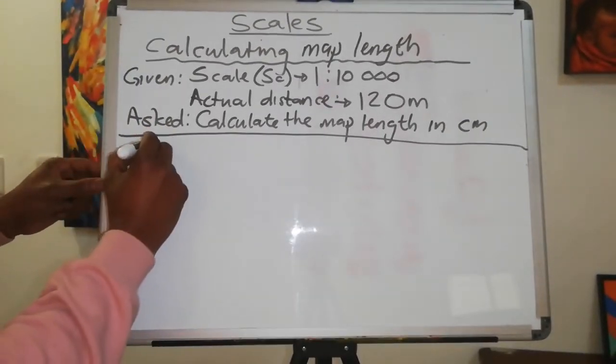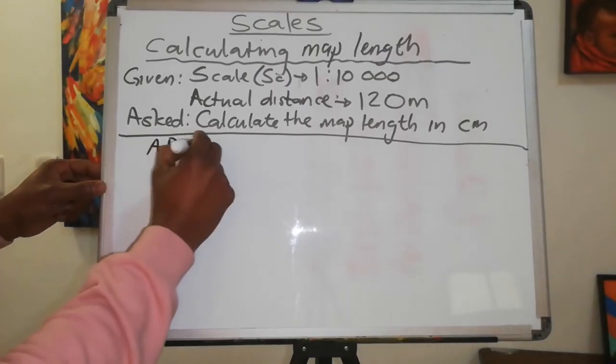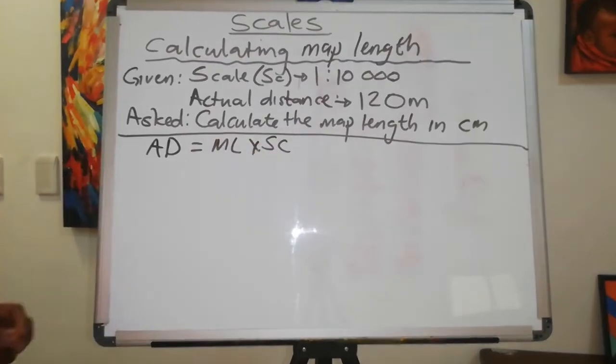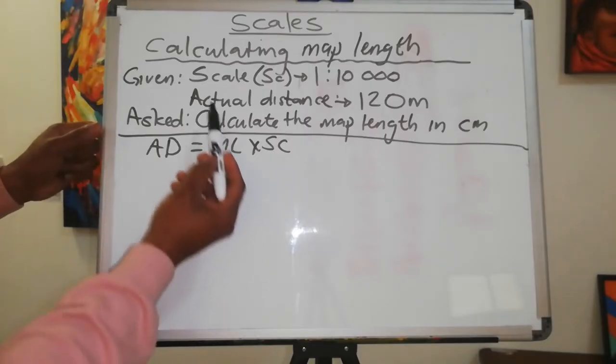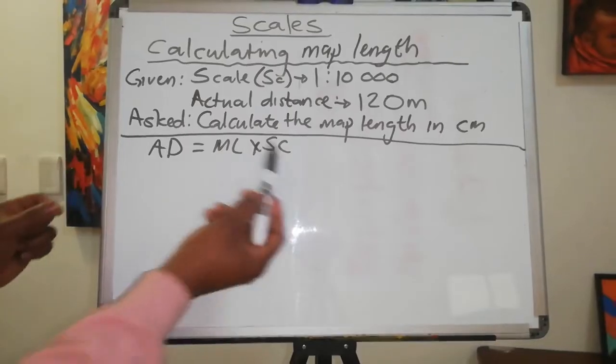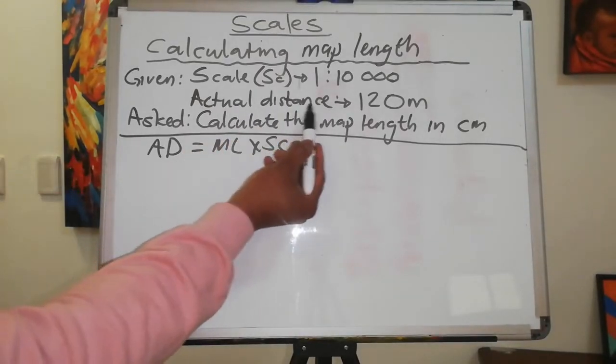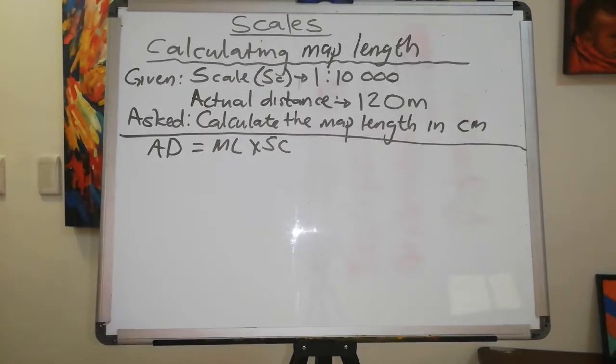We say actual distance is equal to the map length times the scale. Again, we are going to substitute into the formula as the information is given to us. Where we see scale, we are going to substitute scale with 10,000. Where we see actual distance, we will substitute it with 120 meters.